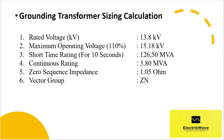We will now do the grounding transformer sizing calculation for the following given parameters: rated voltage 13.8 kV, maximum operating voltage 110% — 15.18 kV, short time rating for 10 seconds: 126.50 MVA, continuous rating: 3.80 MVA, zero sequence impedance: 1.05 ohm, vector group: ZN.